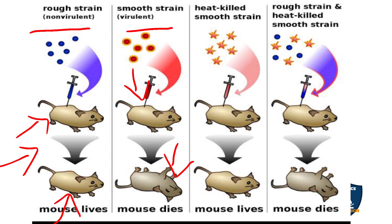Next, the heat-killed smooth strain was prepared. By heat killing, the DNA — the genetic material of the killer strain — is destroyed, leaving only the cell wall. When this heat-killed S strain was injected into the rat, the rat survived.